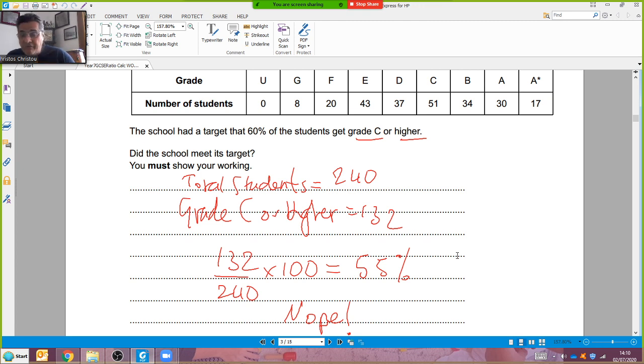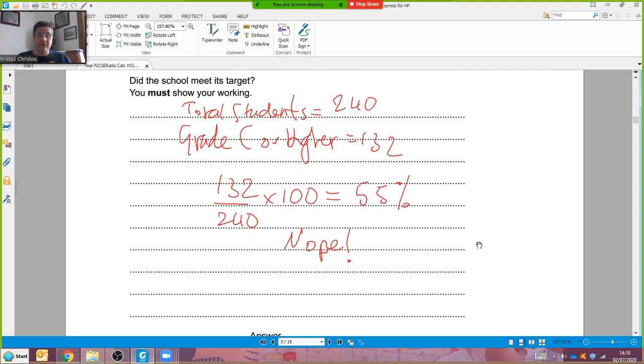Don't do that, it's not worth anything, it just confuses me, the examiner. Just keep it simple. A few words will help: total, grades C or higher, one step calculation, answer, conclusion. Five marks.